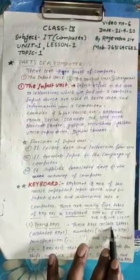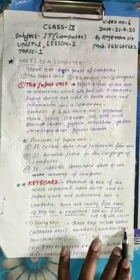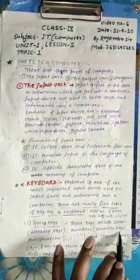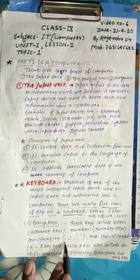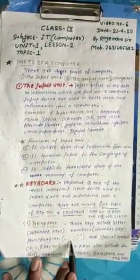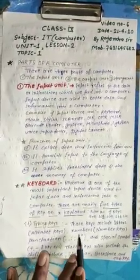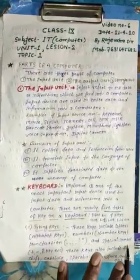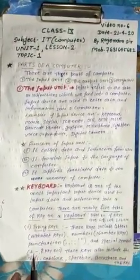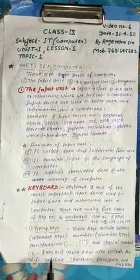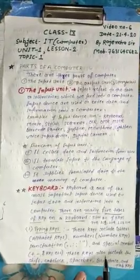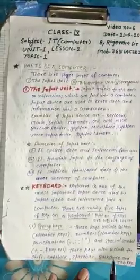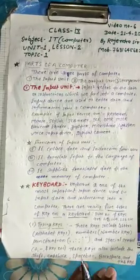First, typing keys. These keys include letters (alphabet keys), numbers (number keys), punctuations like full stop, comma, colon, semicolon, single quotes, double quotes, and special symbols like plus, minus, dollar, etc. These keys also include the shift, caps lock key, spacebar key, backspace key, and tab key.